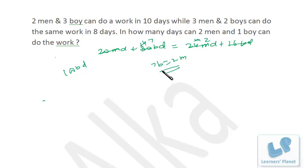Now here we are having two men and one boy. Two men is equal to seven boys, seven boys and one boy, eight boys are there. The work is of hundred boy-days, so they will take 12.5 days to complete the work.